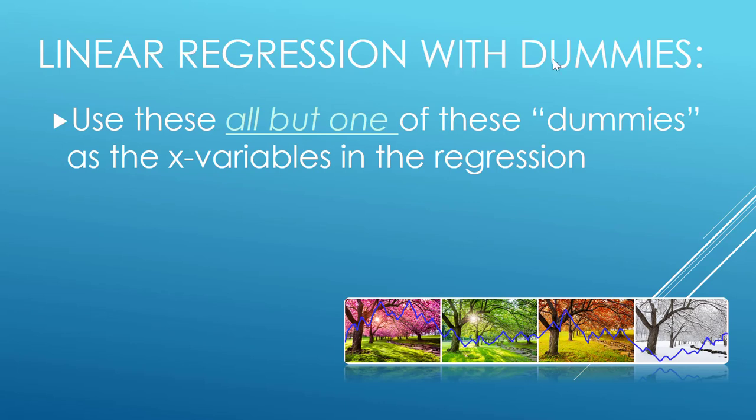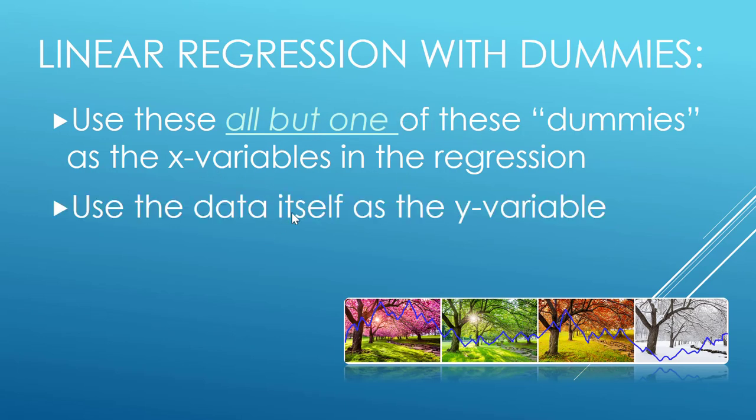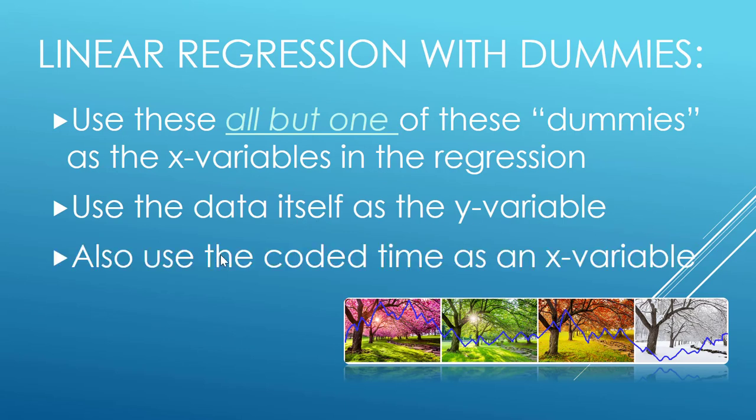We create these dummy variables for each quarter if it's quarterly data or for each month if it's monthly data, but then we include all but one of these values when we're doing our regression. We make them x variables and use the data itself as a y variable.